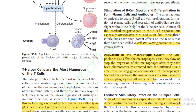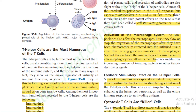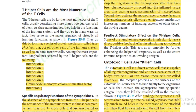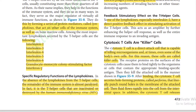Interleukins also participate in the B cell response, especially interleukins 4, 5, and 6 — these three have such potent effects on B cells that they have been called B cell stimulating factors or B cell growth factors. Lymphokines also affect the macrophage system: first they slow or stop migration of macrophages that have been chemotactically attracted into inflamed tissue, causing great accumulation of macrophages, and then they activate macrophages to cause far more efficient phagocytosis.